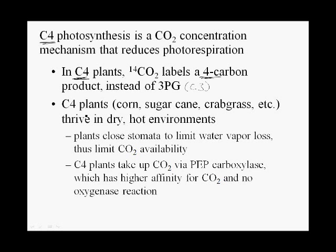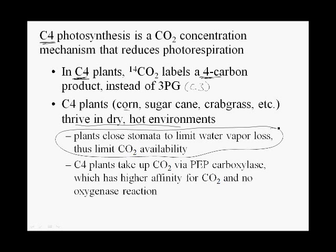Some of the better known C4 plants are corn and sugarcane, and the crabgrass that comes up on your lawn. They're all C4 plants and they typically thrive in dry and hot environments. In dry hot environments, plants have to close their stomata to limit water vapor loss, but that also limits gas exchange.